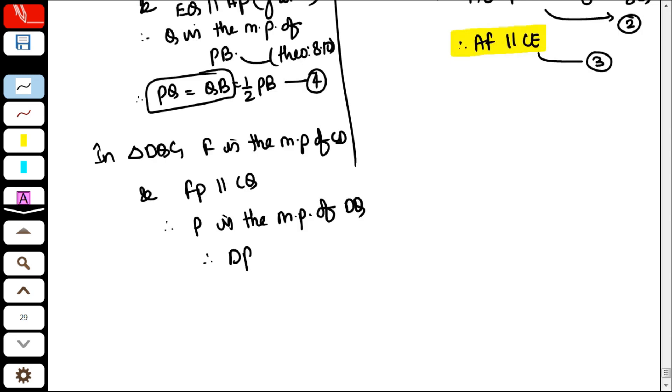Because of that, what happened? DP is equal to PQ is equal to half DQ. Point number 6. This is point number 5. Theorem 8.10. OK?